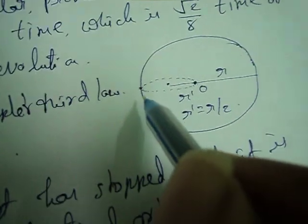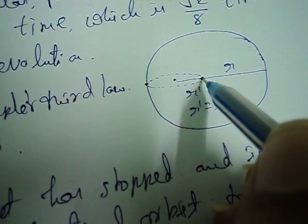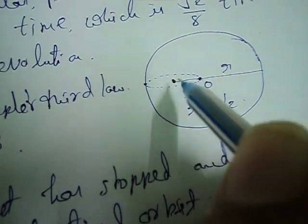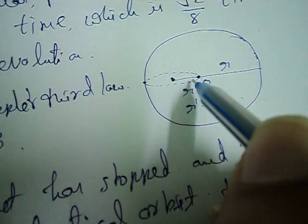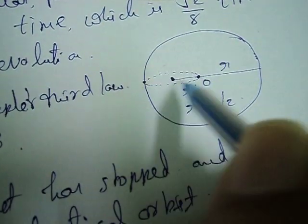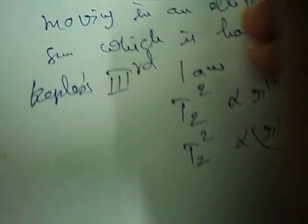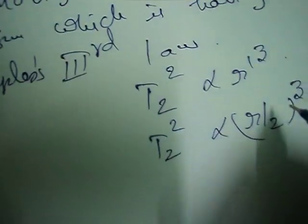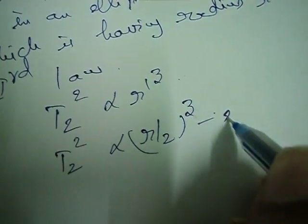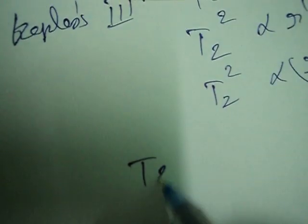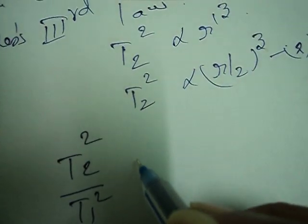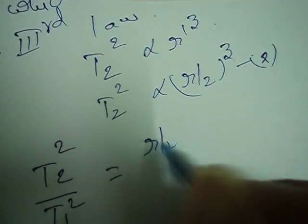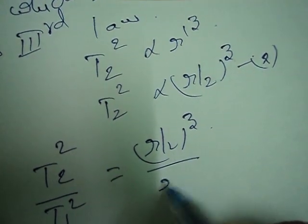When the particle suddenly stops, it will fall into the sun. The particle does not move directly towards the sun — it moves in an elliptical orbit because of the central force. Taking equation 1 and equation 2, we get: T2 squared divided by T1 squared is equal to (R/2) cubed divided by R cubed.